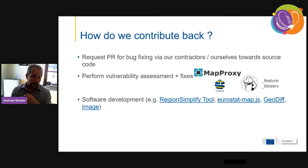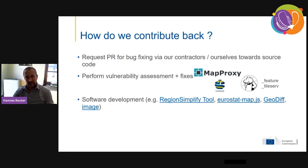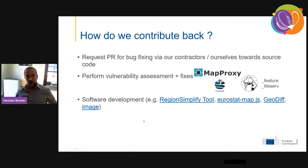Besides that, we also do our own software development and contribute back to the open source community. For example, we've developed a region simplify tool that aggregates and generalizes polygons — such as country or NUTS datasets — to various levels. Based on D3, we have Eurostat map.js for image map making, and GeoDiff, which allows comparison between two different datasets.